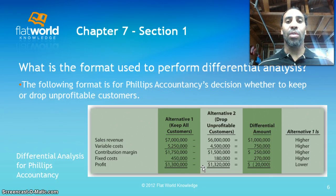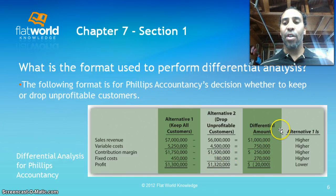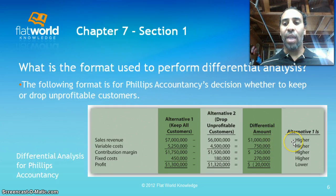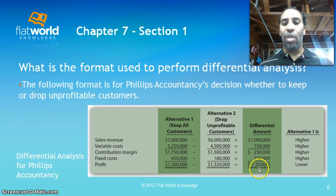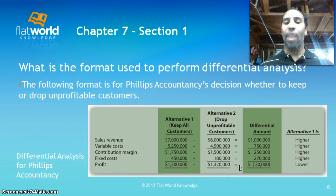So what's our solution? Do we drop this customer? Yes, we drop that unprofitable customer. Looking at the differential amount, alternative one is higher in revenues and costs but the profit is lower at $1,300,000 versus $1,320,000. So if the profit is lower to keep all the customers, we're going to go with dropping that unprofitable customer.